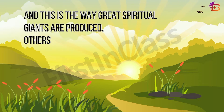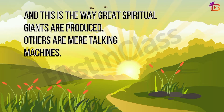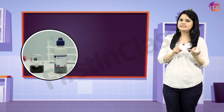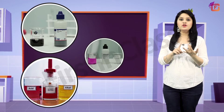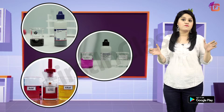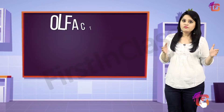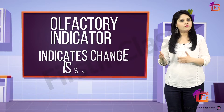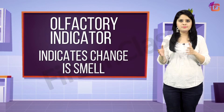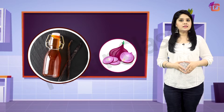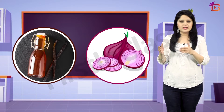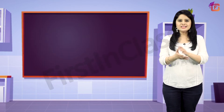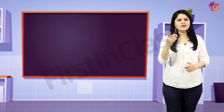In the previous video we learned about indicators such as litmus, methyl orange, and phenolphthalein. Apart from this we also came to know about olfactory indicators, which indicate the nature of a substance by the change in smell. Vanilla and onion are some common olfactory indicators.